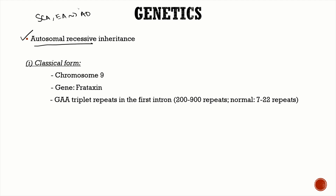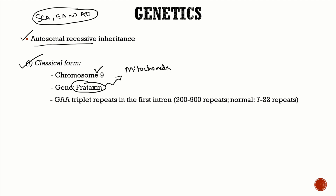The classical form is due to a mutation in the frataxin gene, which is present on chromosome 9. Frataxin is a mitochondrial protein that is very important for iron homeostasis. In Friedreich's ataxia, there is decreased expression of the frataxin gene product, leading to increased intracellular accumulation of iron and irreversible cell injury.